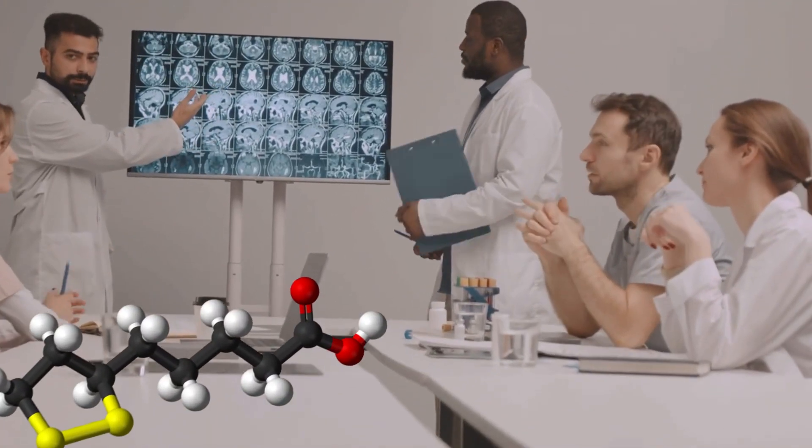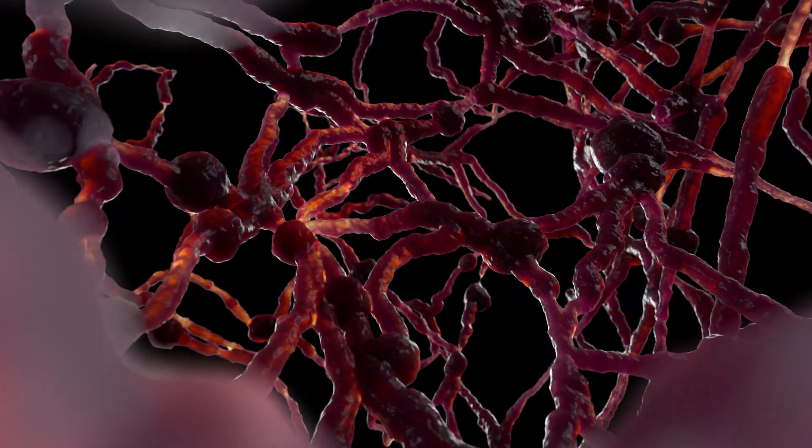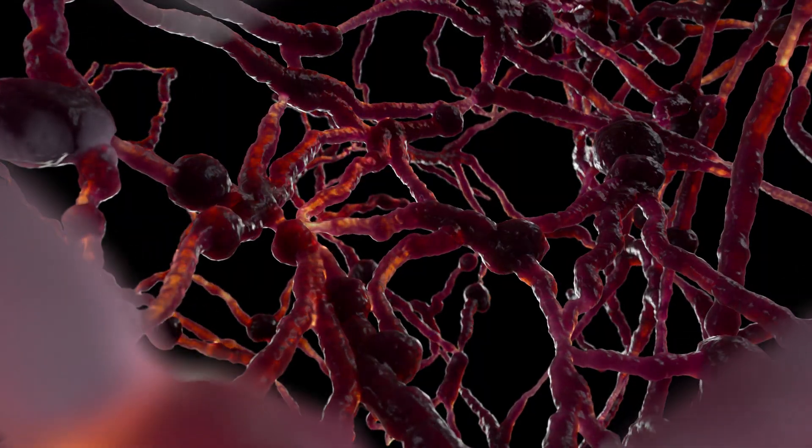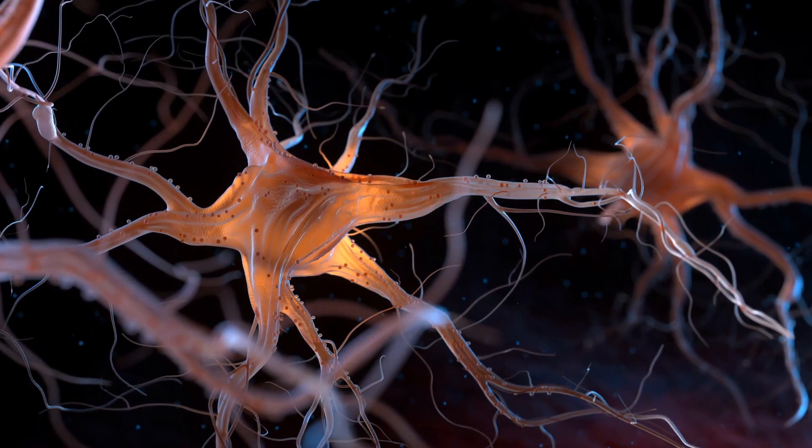alpha-lipoic acid is a bit of a cult favorite among neurologists. It neutralizes free radicals, improves blood flow to nerves, and increases glucose uptake by nerve cells. That's a triple threat for healing damaged nerves and keeping them energized.